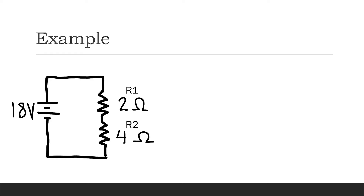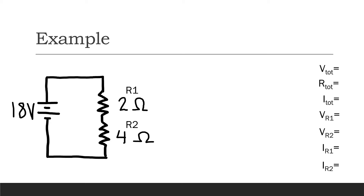Imagine you have a circuit with two resistors in series and a power supply. The first resistor has 2 ohms of resistance and the second resistor has 4 ohms of resistance. We want to use Ohm's Law to find the total voltage, total resistance, total current, the voltage across R1 and R2, and the current through R1 and R2.